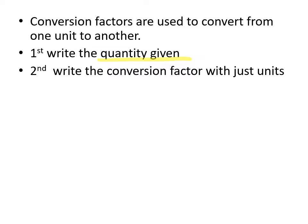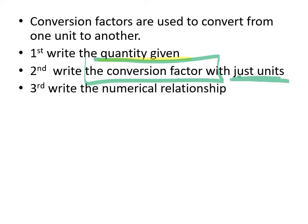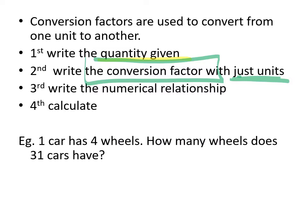The second thing is to write the conversion factor itself. This is essentially the ratio that will relate the thing you have to the thing that you want to have. I'm going to get you to write it first with just the units itself. Then you're going to write the numerical relationship between those two values. You do the calculation maybe with the help of a calculator and then you're done.